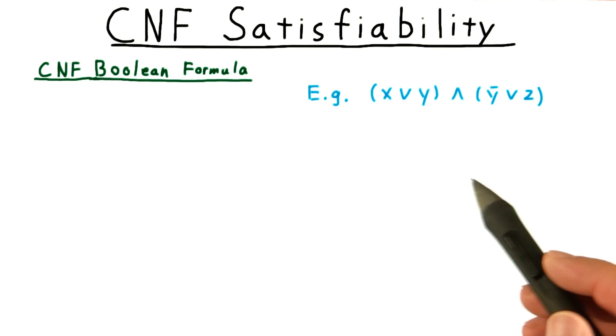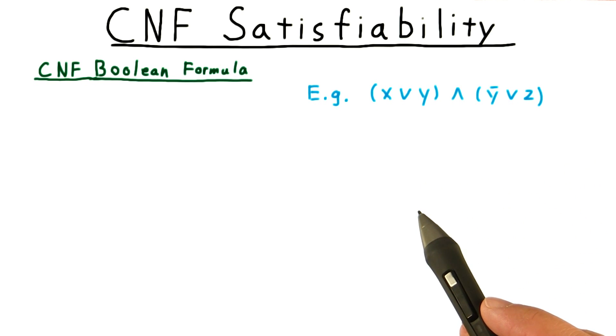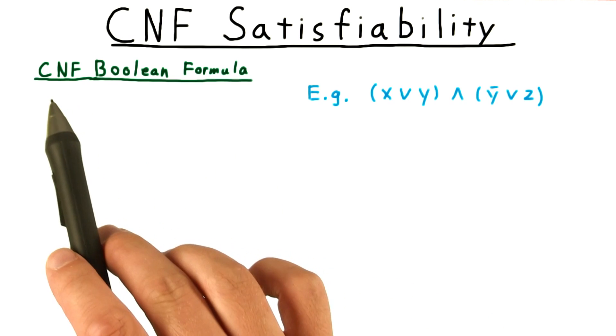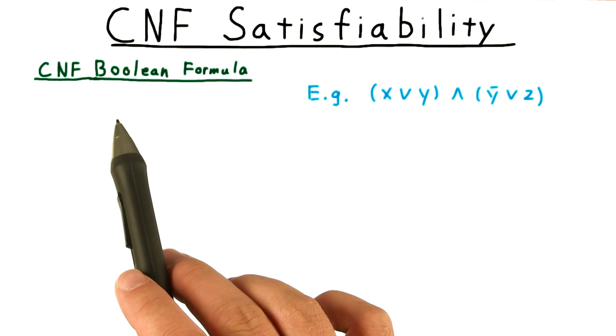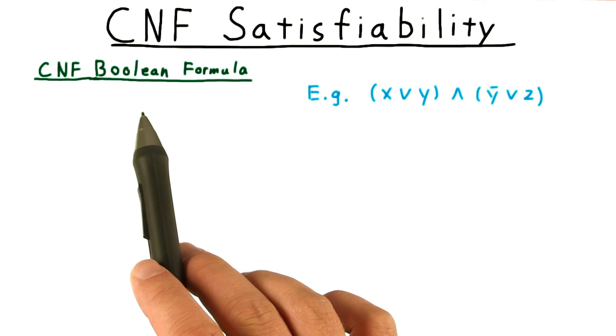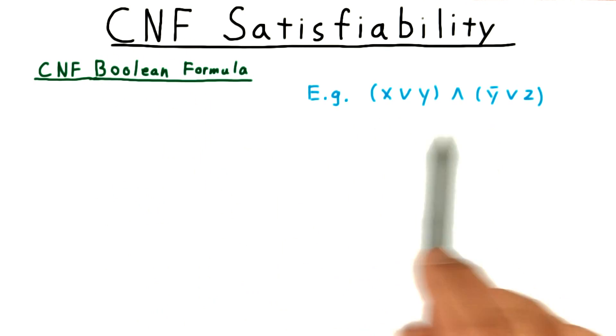For our purposes, we won't have to work with the most general satisfiability problem. Rather, we can restrict ourselves to a simpler case where the Boolean formula has a particular structure called conjunctive normal form, or CNF, like this one here.